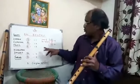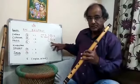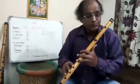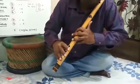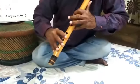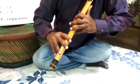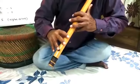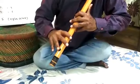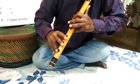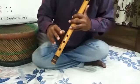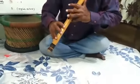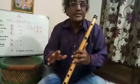In this Raga, two Svars — Ma and Ni — are not used. They are restricted Svars in this Rag. I will now play the Sargam of this Rag: Sa, Re, Ga, Pa, Dha. You must have noted that I have not used Ma and Ni; these two Svars are not used in this Rag.